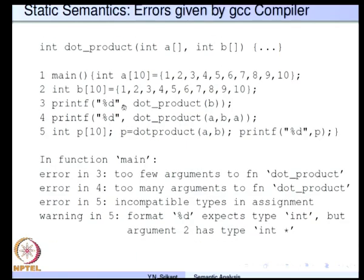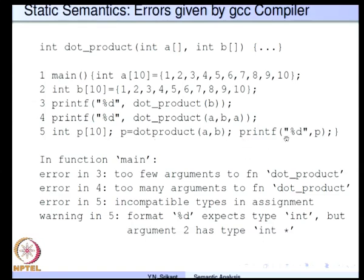Now let us see an erroneous program. The same dot product — I have given only the declaration header — and in the main program there are many errors, and the error messages given out by the GCC compiler are shown. We have a and b as before, and then we are trying to call dot product with a single parameter. Here we are trying to call it with three parameters. Here we call it with two parameters properly, but unfortunately p is not a single integer but an array type. Also, printf says print an integer and p, an array, is provided as a parameter.